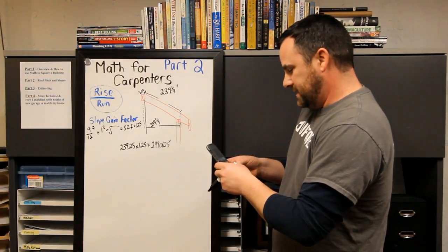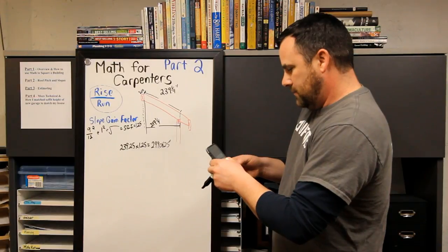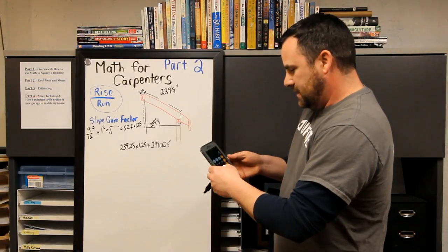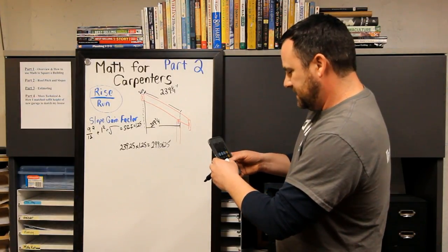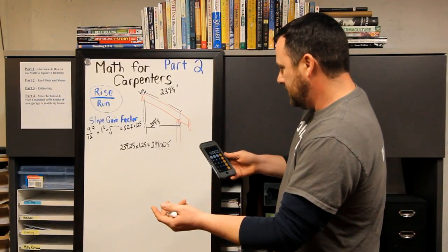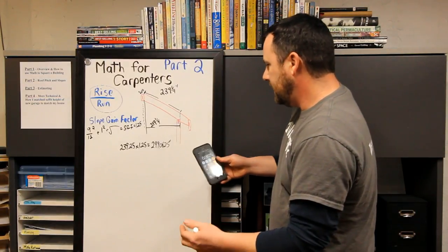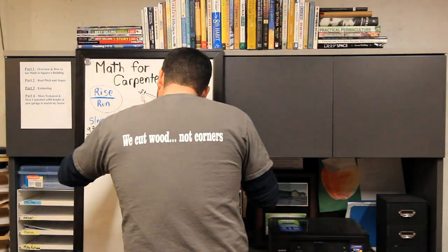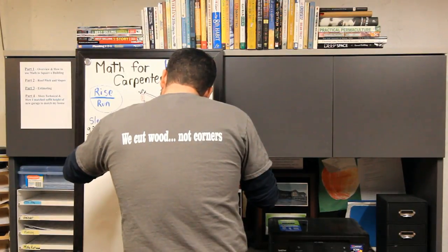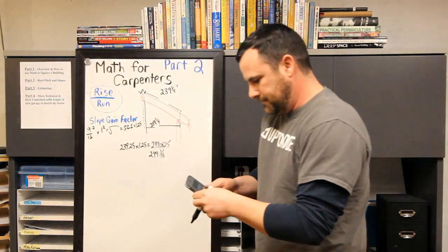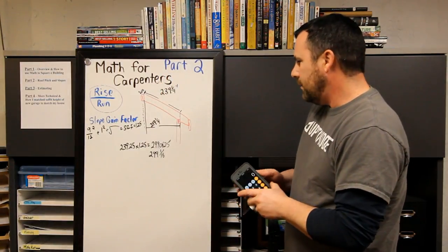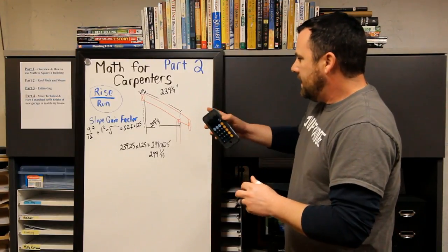Now what I do is, okay, what's 0.0625 of an inch? What I do is I just go 1 divided by 16, which is 1/16th. So that's 299 and 1/16th of an inch.